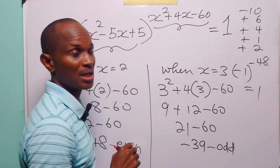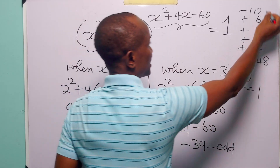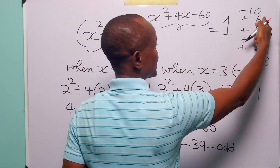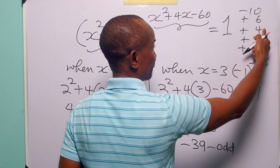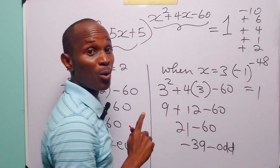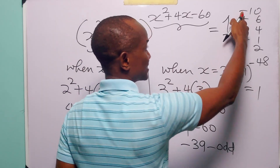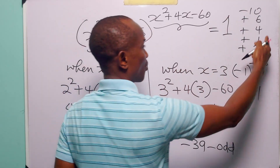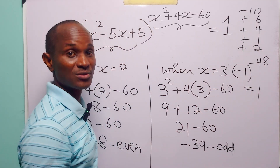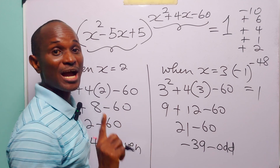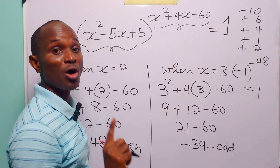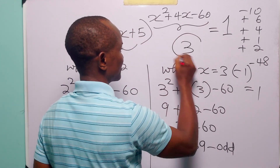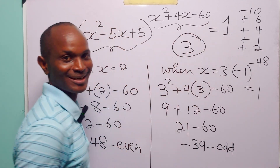So the final root is x = 2. We now have five roots in total: -10, +6, +4, +1, and +2. Adding them: 6 + 4 = 10, 10 - 10 = 0, 1 + 2 = 3, so 0 + 3 = 3. The sum of the roots of this equation is 3.